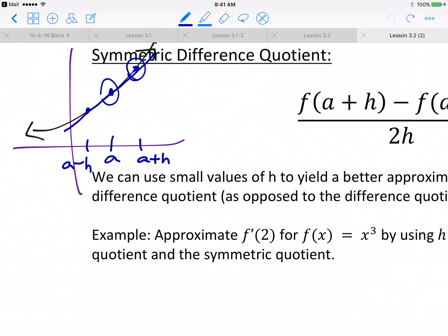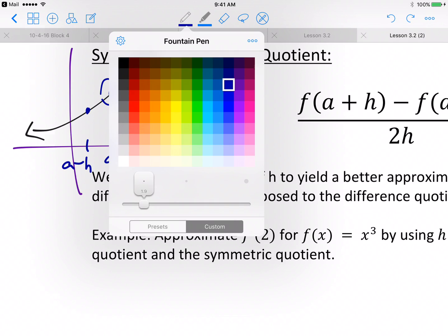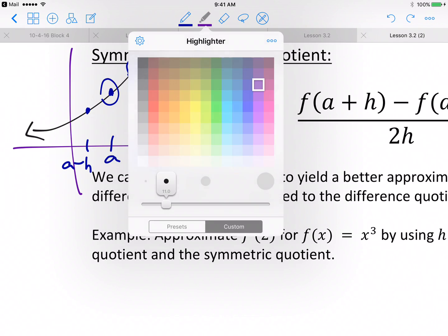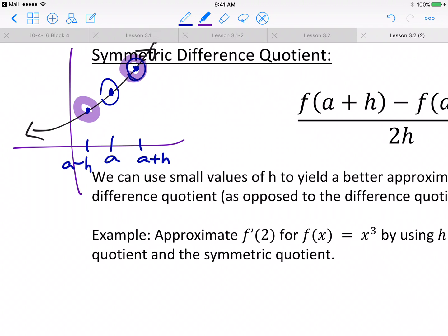And then instead of finding the slope between these two points, we're finding the slope in between these two points right there.